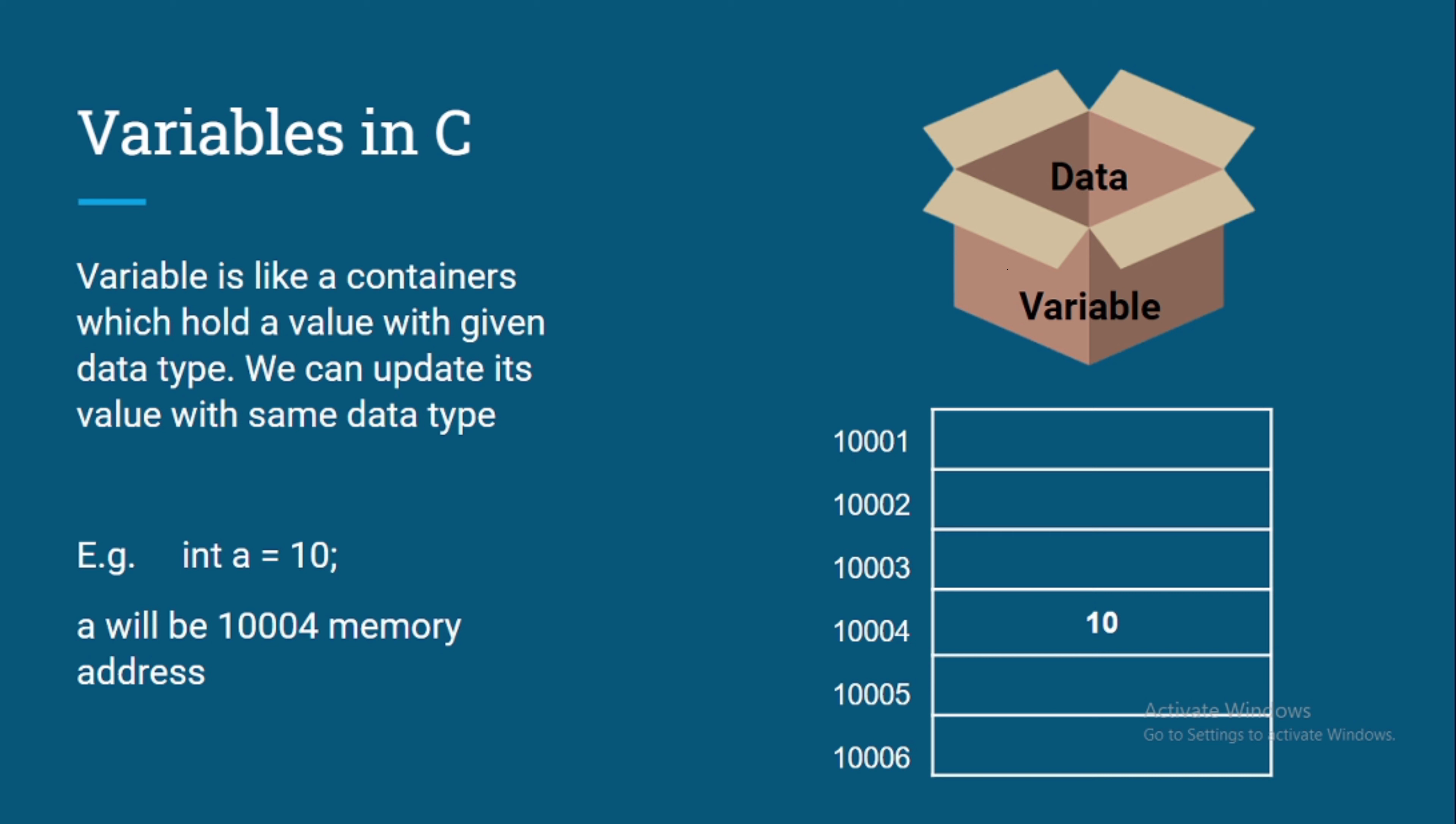What is in our memory? If you go into this diagram where we have 10001, 10002, 10003, these are the memory addresses. The data will be stored into one of the memory addresses because at the end the data will be stored into the memory. So what is a now? 10 will be stored, for example, at 10004.